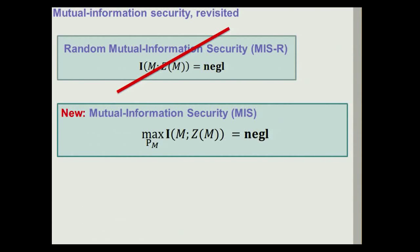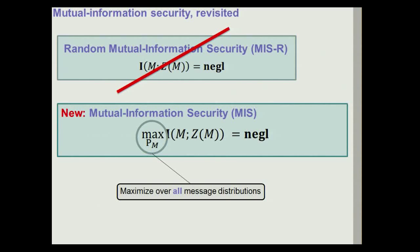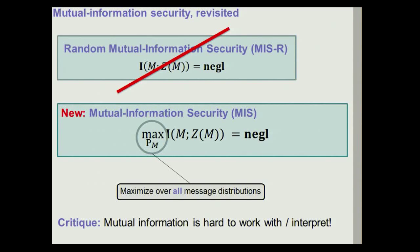We refer to the older notion as random mutual information security. Our improved notion, which we call mutual information security, requires the mutual information to be small for all possible message distributions. From a cryptographic perspective, mutual information is based on Shannon entropies which are hard to work with, and when we think about concrete security it is not exactly clear what a certain number of bits of Shannon security means.